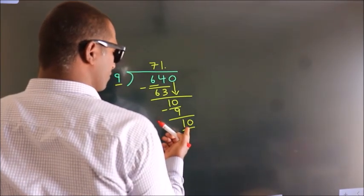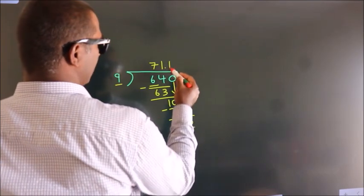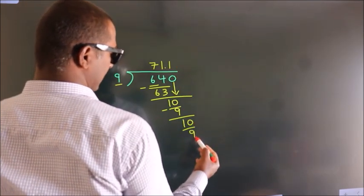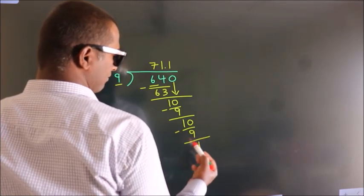A number close to 10 in the 9 table is 9 once, 9. Now we subtract. We get 1.